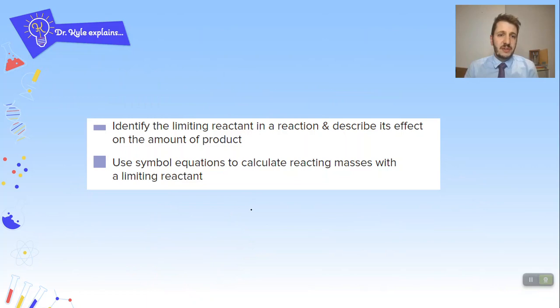Okay so what we've done is we've identified the limiting reactant in a reaction and described its effects on the amount of product. Remember it controls how much is made. We've used simple equations to calculate the reacting masses with a limiting reactant and we've gone through several of those calculations for you to have a go at or for you to watch in your own leisure.